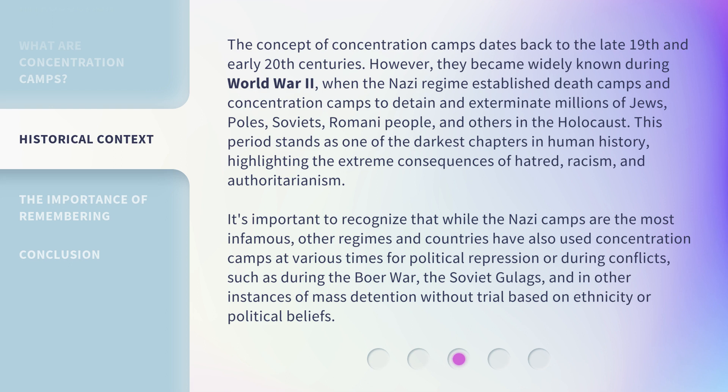This period stands as one of the darkest chapters in human history, highlighting the extreme consequences of hatred, racism, and authoritarianism. It's important to recognize that while the Nazi camps are the most infamous, other regimes and countries have also used concentration camps at various times for political repression or during conflicts, such as during the Boer War, the Soviet gulags, and in other instances of mass detention without trial based on ethnicity or political beliefs.